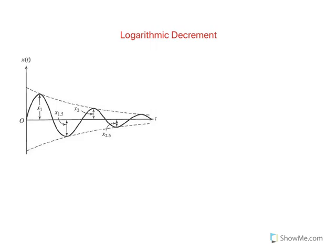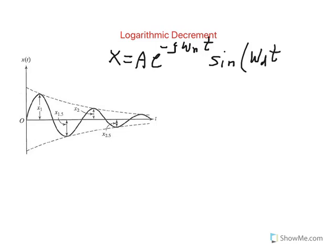The solution to an underdamped system, X as a function of time, is equal to some constant A times e to the minus zeta (damping ratio) times omega_N (natural frequency) times t, times sine of omega_D (the damped frequency) times t, plus some phase angle. This is the solution to an underdamped system, and the whole concept of log decrement only applies to an underdamped system.